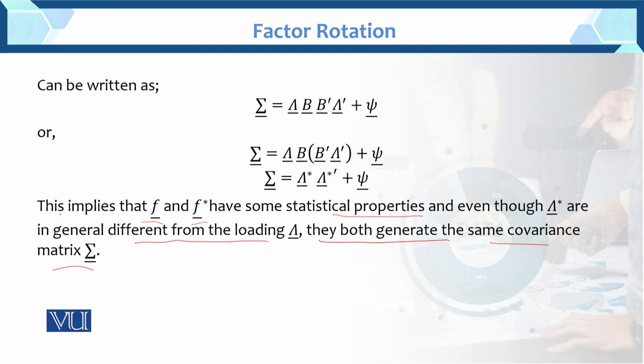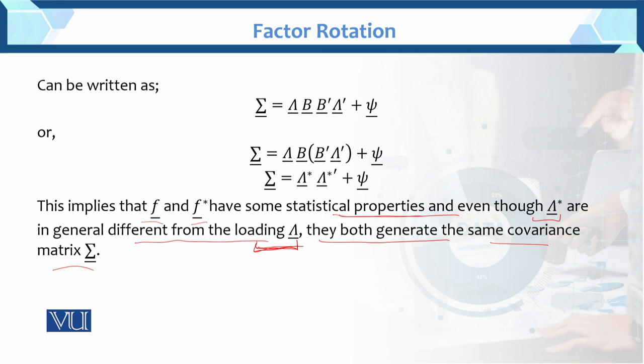So basically this is factor rotation. Rotation means we have done transformation. After transformation we have seen the exact solution exist. And after that we have seen the factor loadings - which will be different (lambda star vs lambda) but generate the same covariance matrix sigma. This is the concept of factor rotation: both lambda and lambda star are different factor loadings but both generate the same variance-covariance matrix sigma.